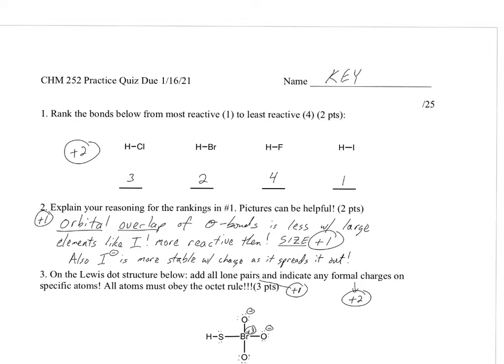So every single one of these has a hydrogen. So that's staying consistent, and what's changing is chlorine, bromine, fluorine, and iodine. And if you know where these are at the periodic table, you know that they are in the same column. So size becomes more important. As you go down a column, size is more important.